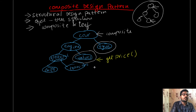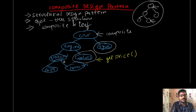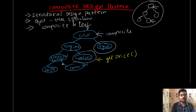So these are the two principles needed for qualifying the tree structure of an object into a composite design pattern. There are various use cases where we would use the composite design pattern to solve real-life problems. We will try to cover one of those real-life problems using an implementation in the upcoming videos, so please stay tuned to this channel.